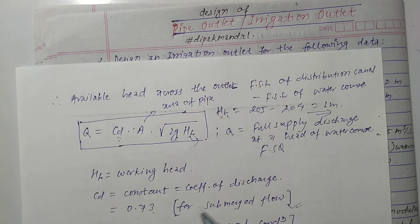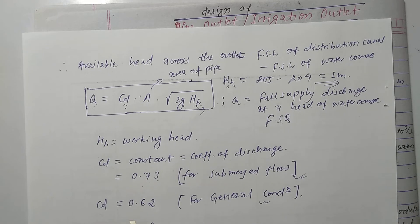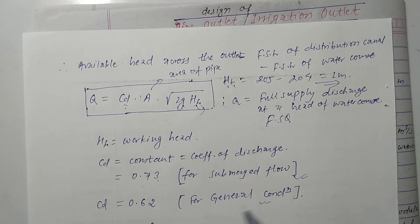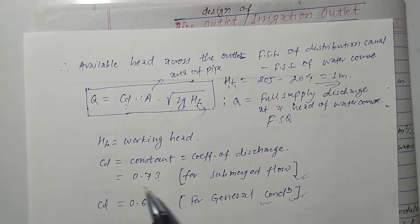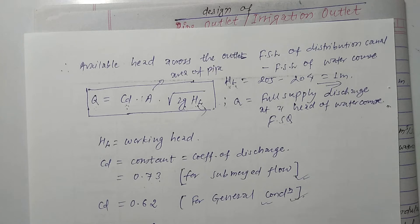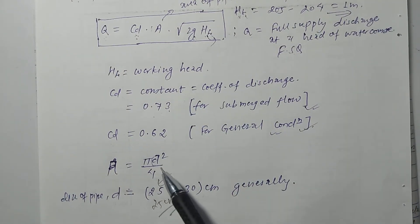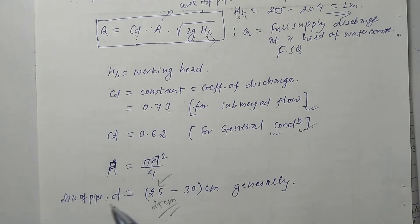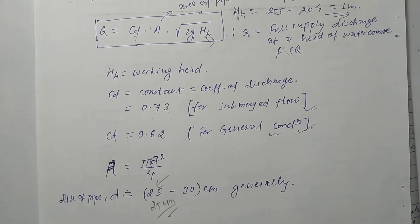CD is the coefficient of discharge. This value is generally taken as 0.62 for general conditions. But for the special condition — submerged flow — we take CD equal to 0.73. These are the two important conditions, as discussed in detail in the first video. The value of A is simply the area of pipe: A = π D² / 4, where D is the diameter of pipe. The diameter of pipe is generally taken as 25 to 30 cm.